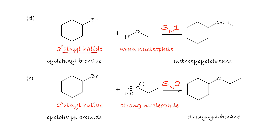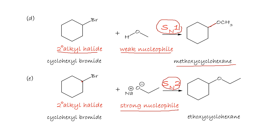A secondary alkyl halide with a weak nucleophile like methanol follows SN1, giving methoxycyclohexane. But a secondary alkyl halide like cyclohexyl bromide with a strong nucleophile follows SN2, giving ethoxycyclohexane.